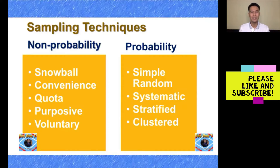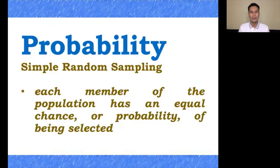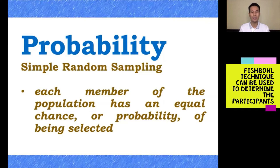Let's start with probability sampling. First, simple random sampling. In this sampling technique, each member of the population has an equal chance or probability of being selected. One way of obtaining a random sample is to give each member a number, then pick one at random until you identify the participants considering your desired number of participants.